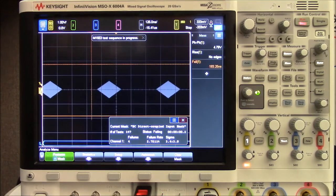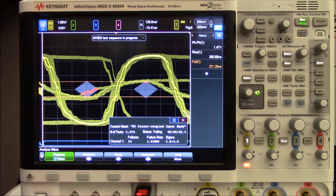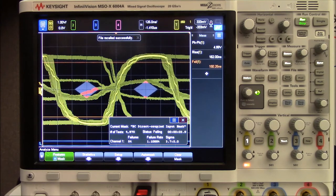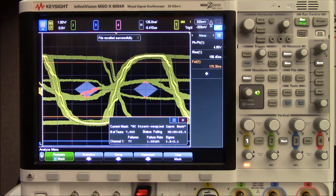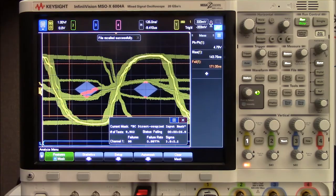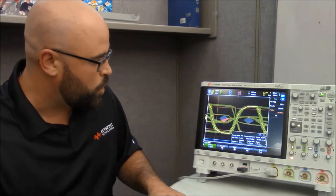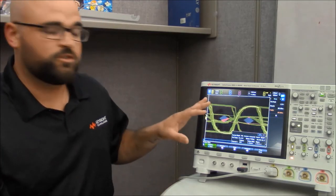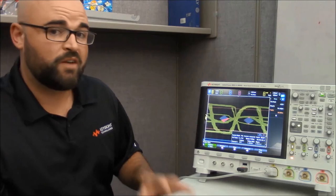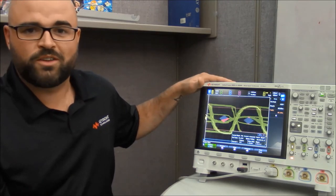And what the scope is doing is counting how many errors or how many violations it sees based on the physical parameters required by MIL-STD 1553. Now as you can see here we have almost one over one percent failure rate. This is not a system you'd want to be deploying on an aircraft anytime soon, which is why you need one of these.